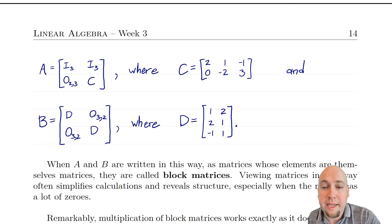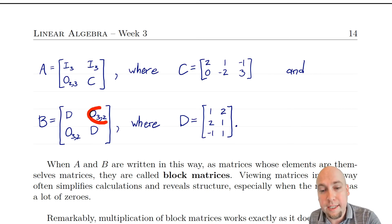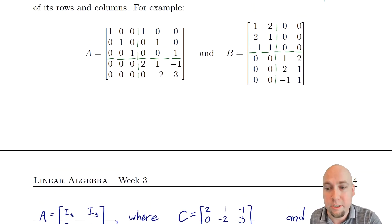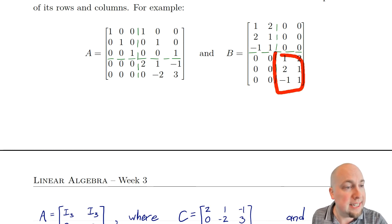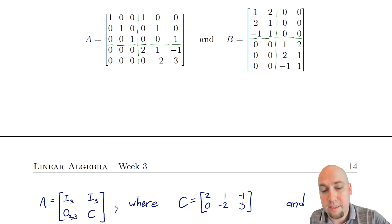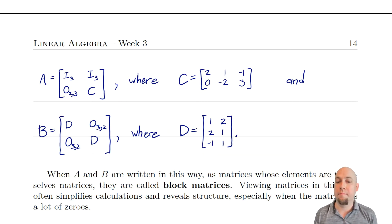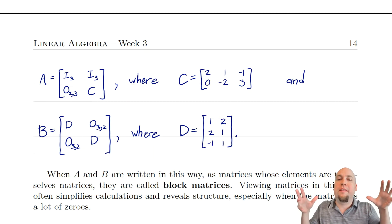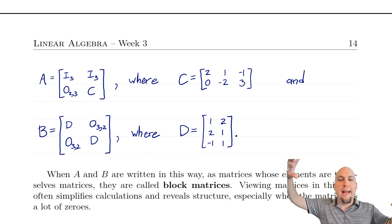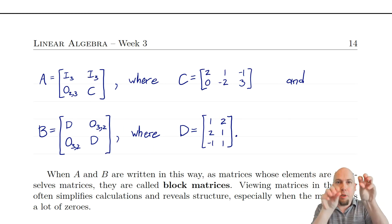I can do a similar thing with matrix B. I can write B as some matrix D, then a zero matrix, a zero matrix, and then that same matrix D again — because in the top left corner there's some entries, and the bottom right corner has the exact same entries, with zeros elsewhere. So I'm thinking of these large matrices as matrices whose entries are smaller matrices.